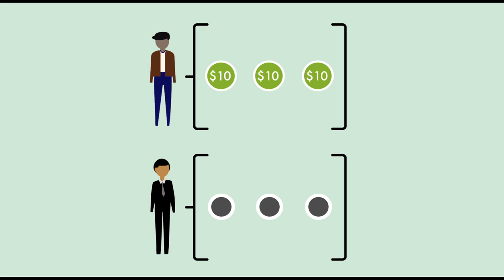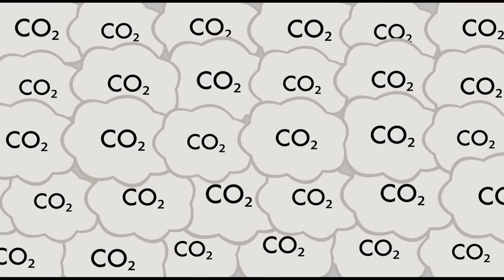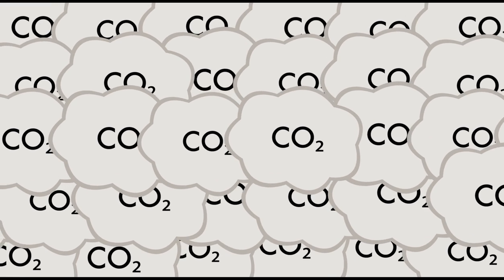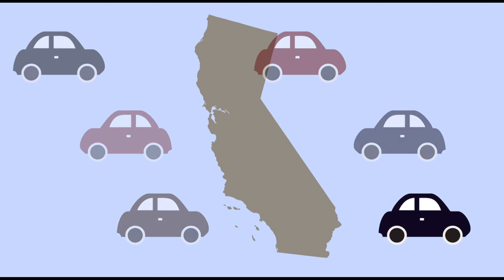Since 2013, about 3 million tons of forest offsets have been purchased and used by California emitters each year. That's like taking every passenger vehicle in California off the road for a week.